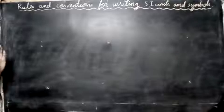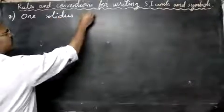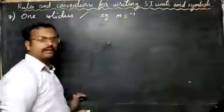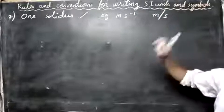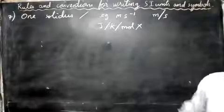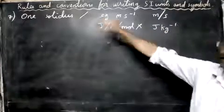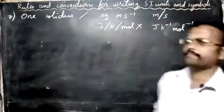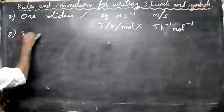The seventh rule: use only one solidus — the slanting slash symbol — per expression. For example, 'meter per second' is written as 'm/s', which is correct. But writing 'joule per Kelvin per mole' as 'J/K/mol' using two solidi is wrong. Instead, write it as 'J kg⁻¹ K⁻¹ mol⁻¹'.